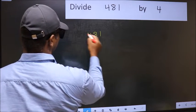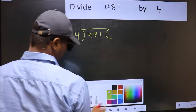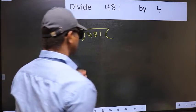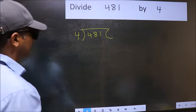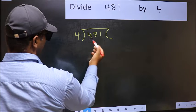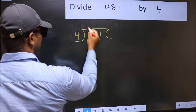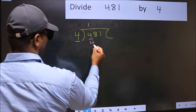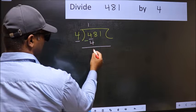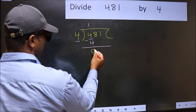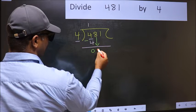481 and 4 here. This is your step 1. Here we have 4, and here also 4. When do we get 4 in the 4 table? 4 once is 4. Now you should subtract: 4 minus 4 is 0. After this, bring down the beside number. So 8 comes down.